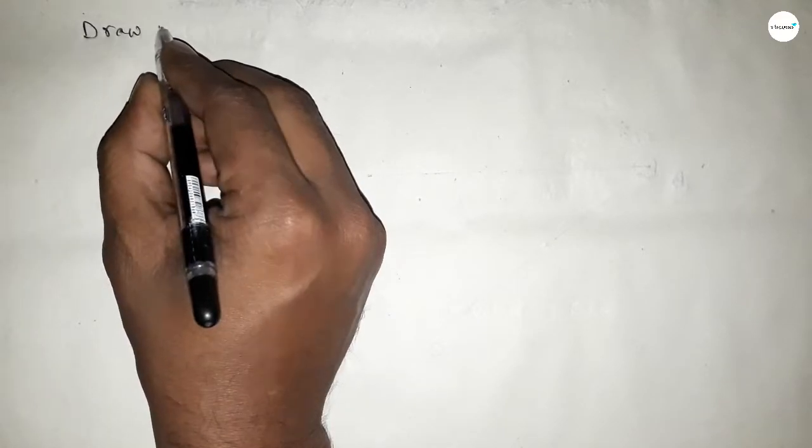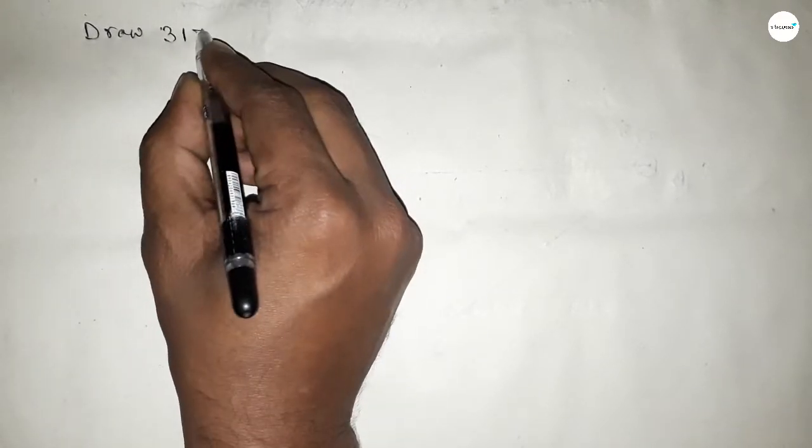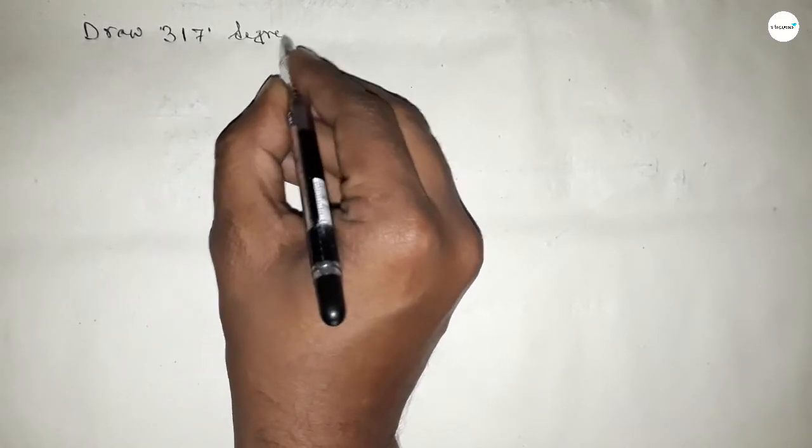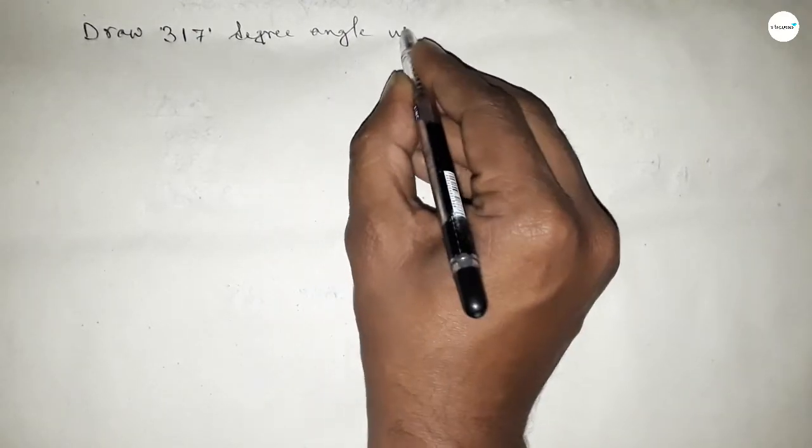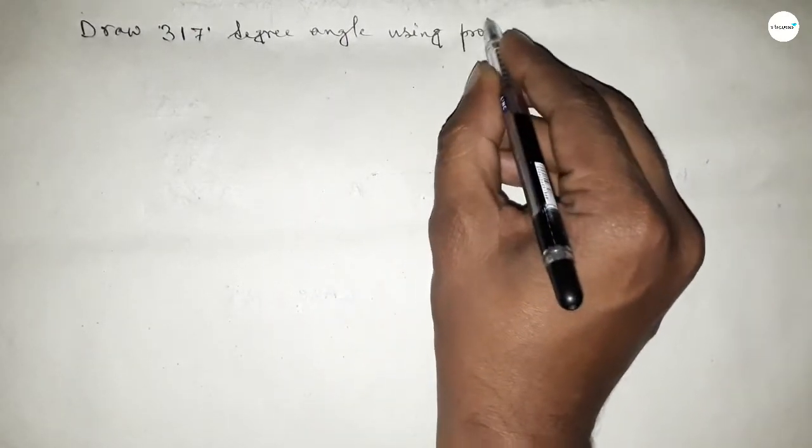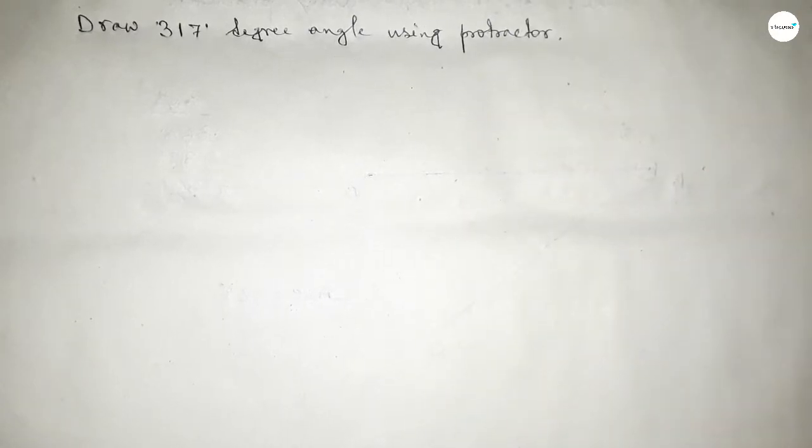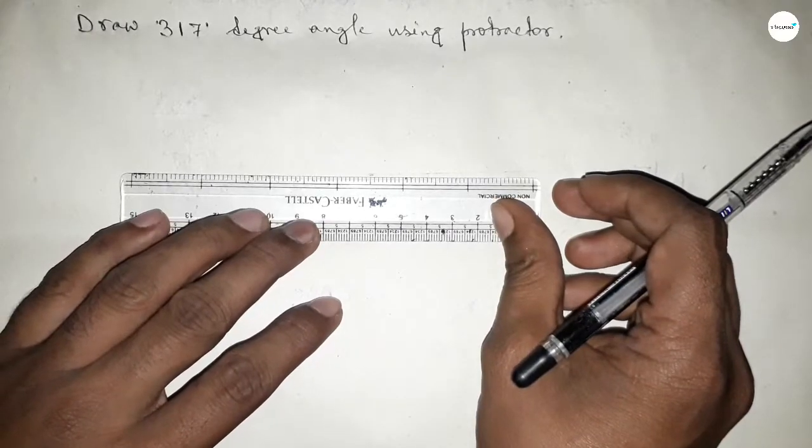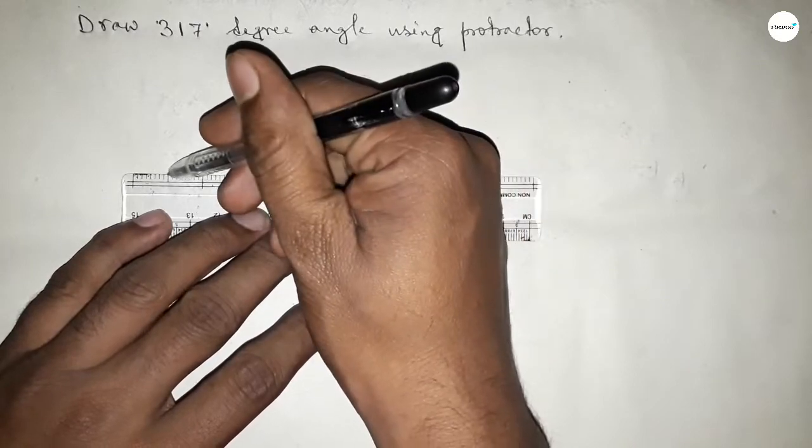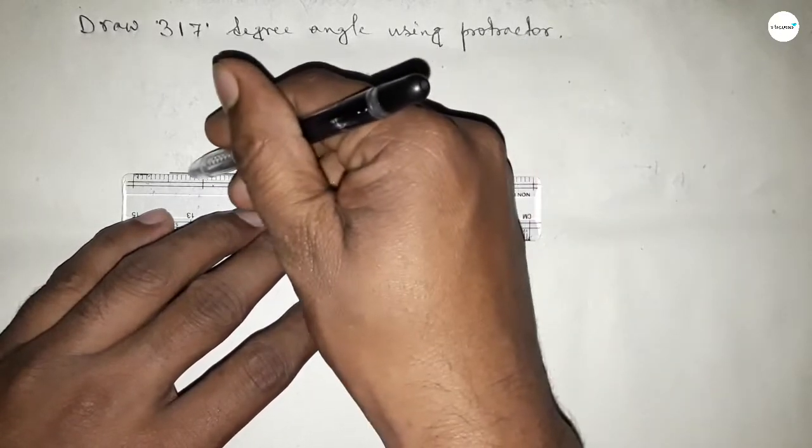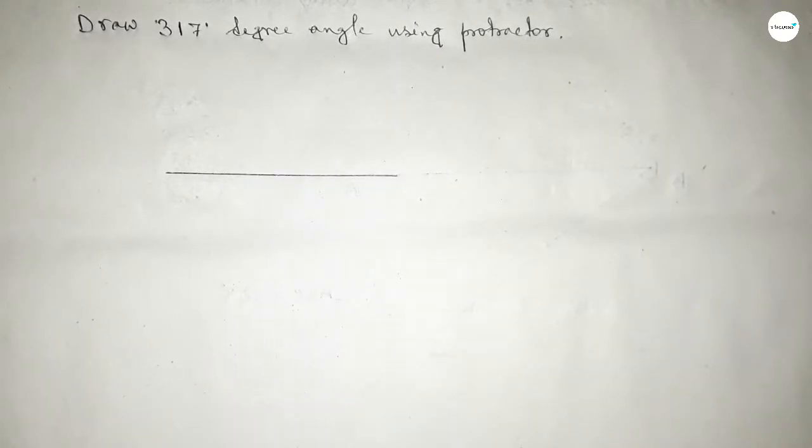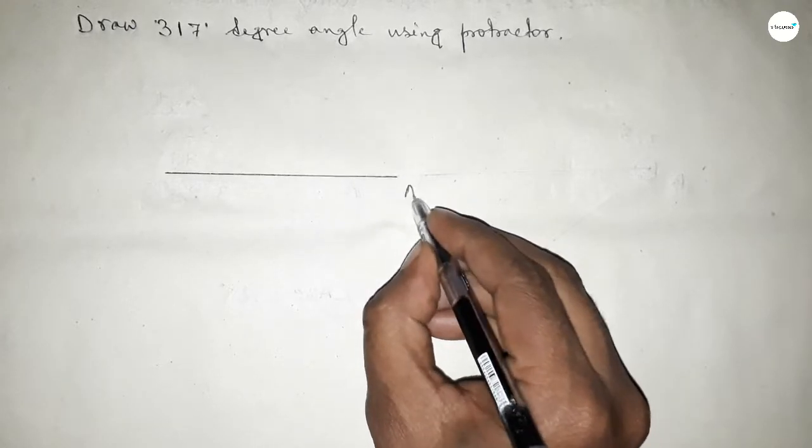Hi everyone, welcome to SSR Classes. Today in this video we have to draw a 317-degree angle using a protractor. So let's start the video. First of all, draw a line of any length, then mark point A and point B.